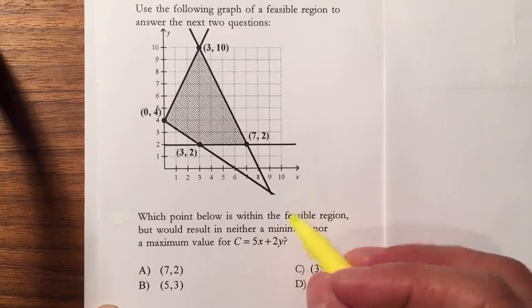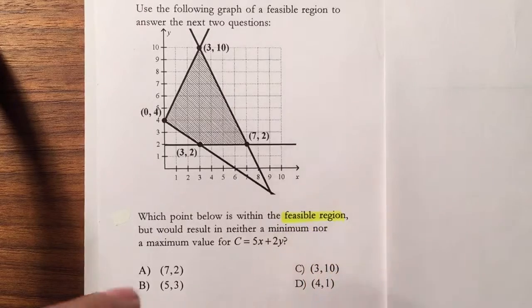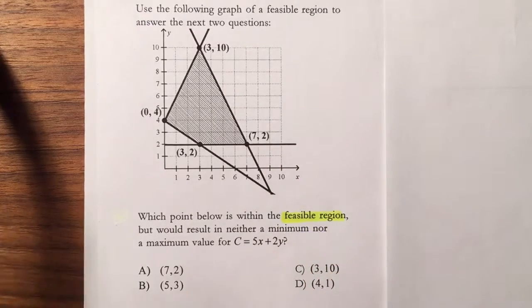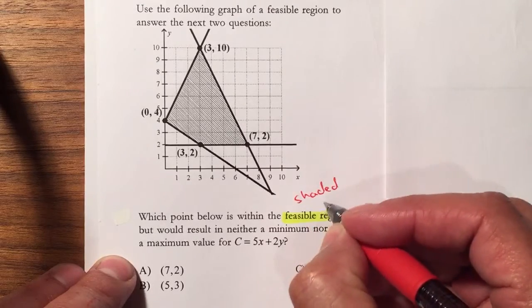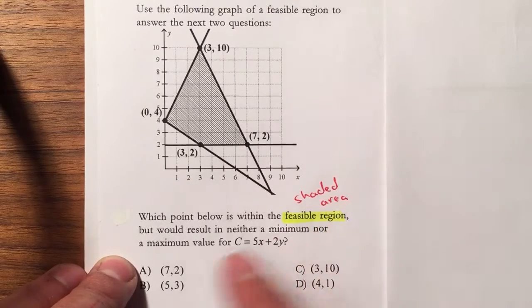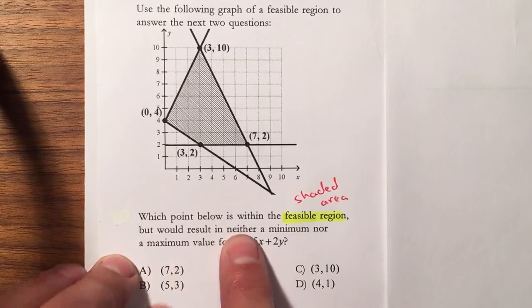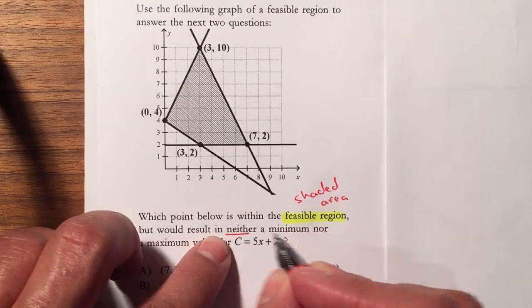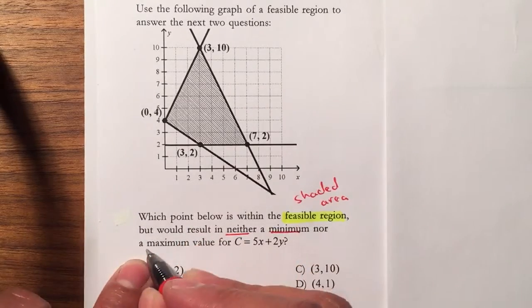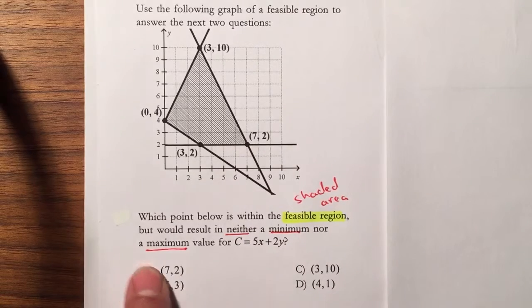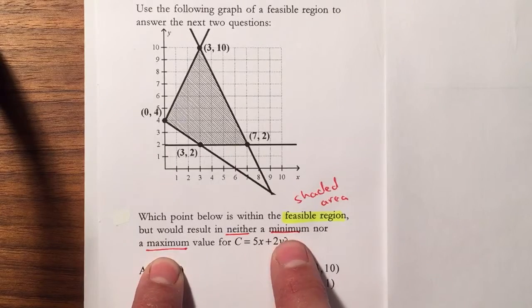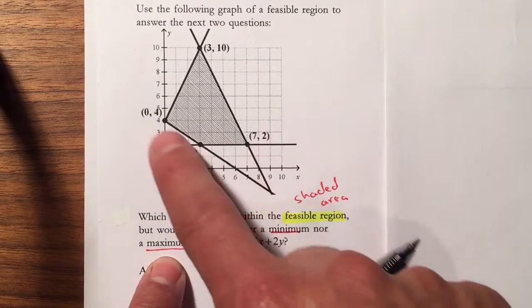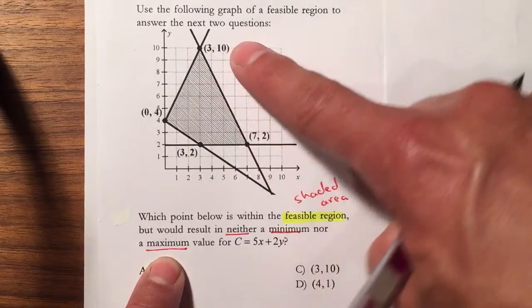Remember the feasible region is your shaded area, so we want it to be shaded but will result in neither the minimum nor the maximum. So we don't want it to have an opportunity to have a minimum or maximum value. And we know the minimum and maximum values are your vertices, so we know we don't want it to be a vertex.